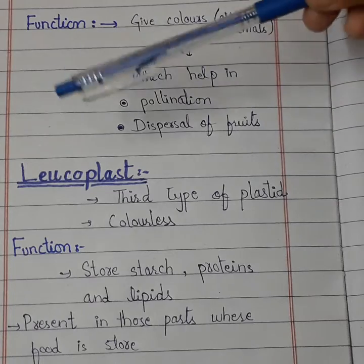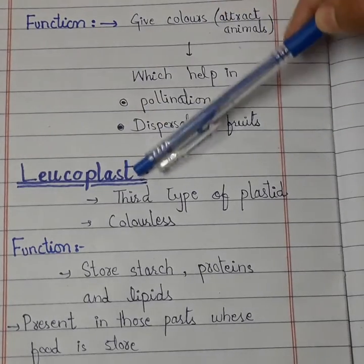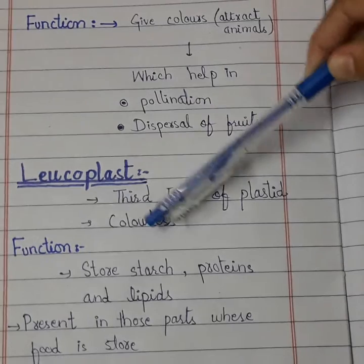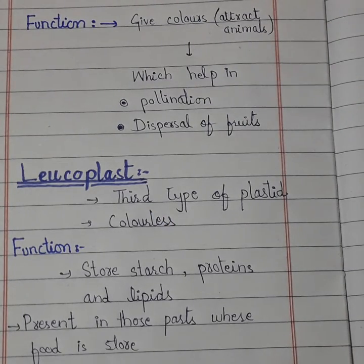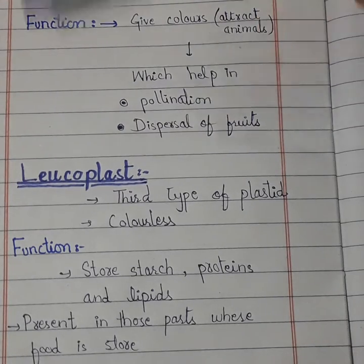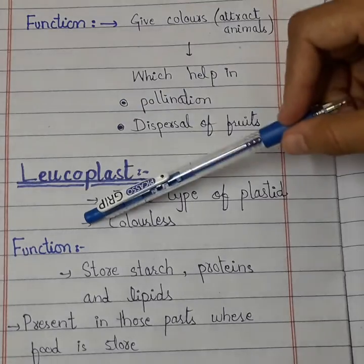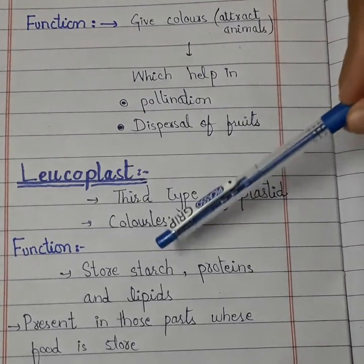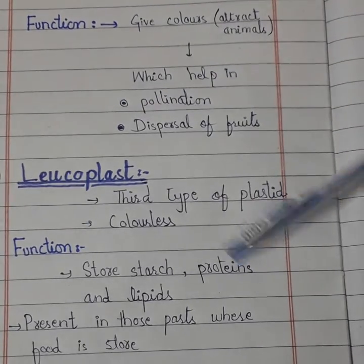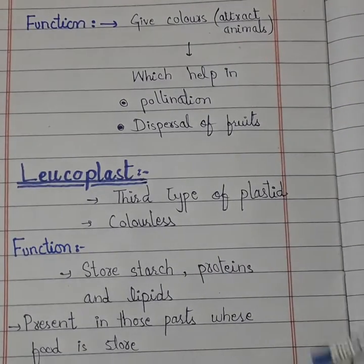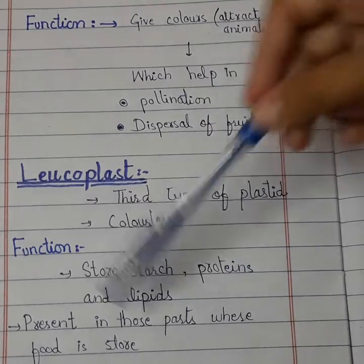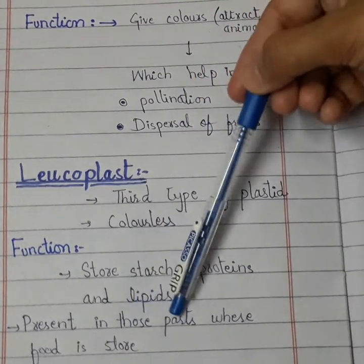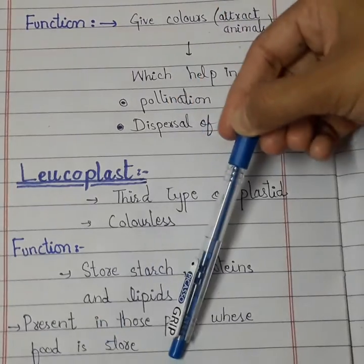The last type is leucoplasts. These are the third type of plastids and they are colorless — unlike chloroplasts which are green and chromoplasts which are bright colors. Leucoplasts store starch, protein, and lipids. They are present in those parts of the plant where food is stored.